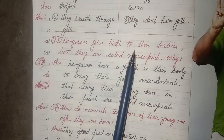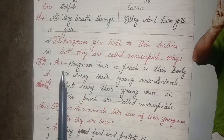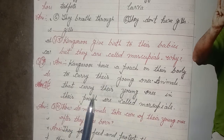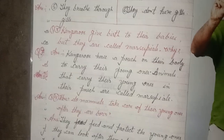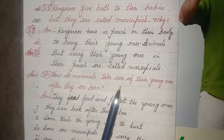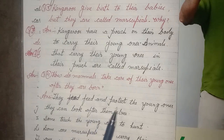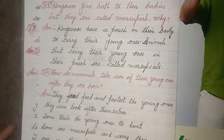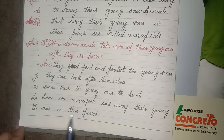Three, kangaroos give birth to their babies, but they are called marsupials. Why? Answer: Kangaroos have a pouch on their body to carry their young ones. Animals that carry their young ones in their pouch are called marsupials. Four, how do mammals take care of their young ones after they are born? Answer: They feed and protect the young ones until they can look after themselves. Some teach the young ones to hunt. Some are marsupials and carry their young ones in their pouch.